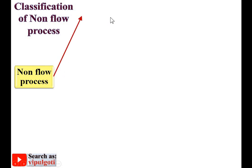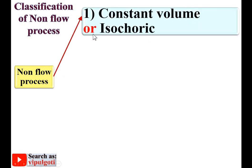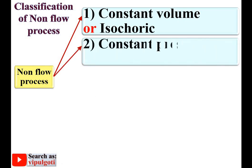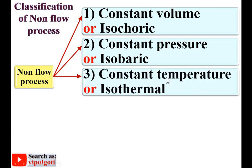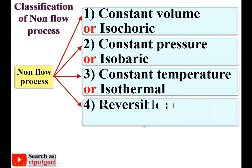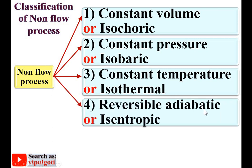We will now discuss the different types of non-flow processes — the classification of non-flow processes. There are many types. First, constant volume process, sometimes known as isochoric process. Second, constant pressure process, sometimes known as isobaric process. Third, constant temperature process, sometimes known as isothermal process. Fourth, reversible adiabatic process, sometimes known as isentropic process.